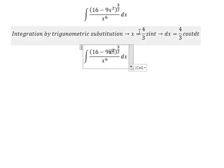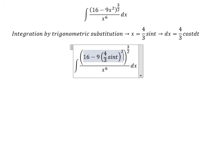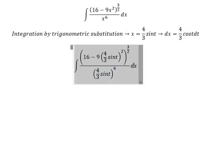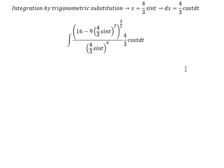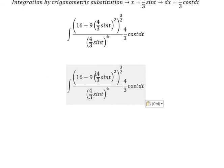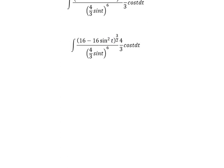We substitute these into the integral. Now we need to simplify. Inside we will get 16 minus 16 sin²(t), which we can factor. We put 16 outside and raise it to the power 3 over 2.